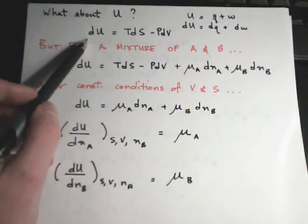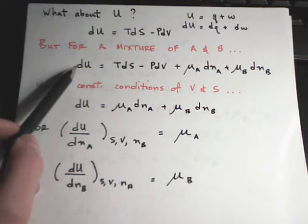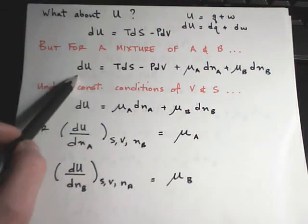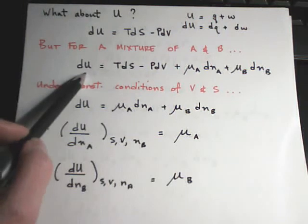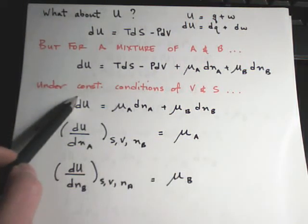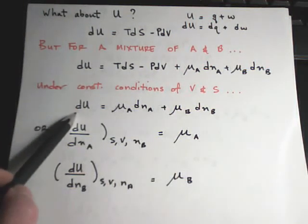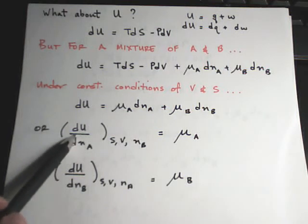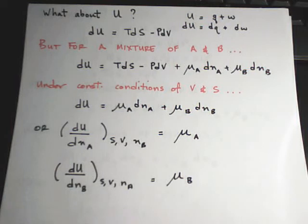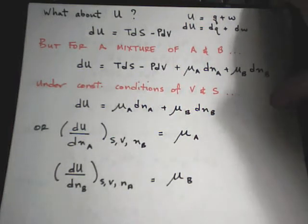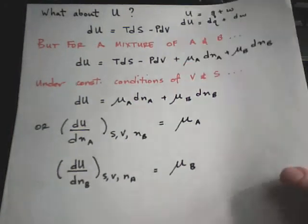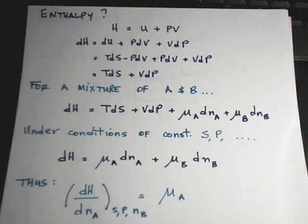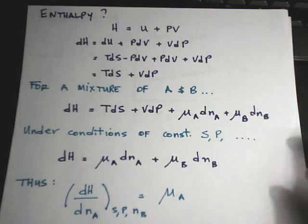So these fundamental equations we derived earlier are modified slightly for the mixture, but when we enforce those constant conditions, we're left with just the composition terms and can see how chemical potential is written in terms of another extensive property. Since we can do that for DU, we can do it for enthalpy DH as well.